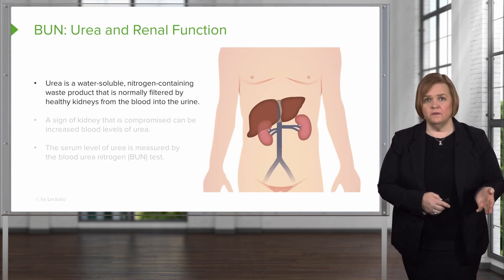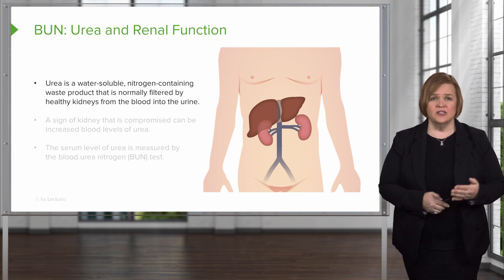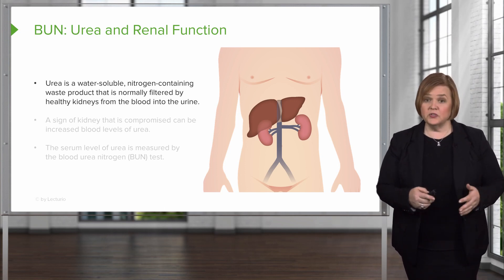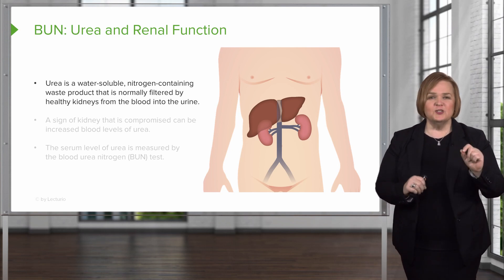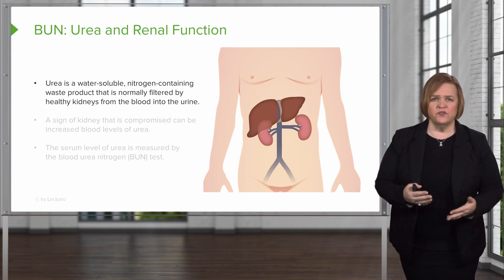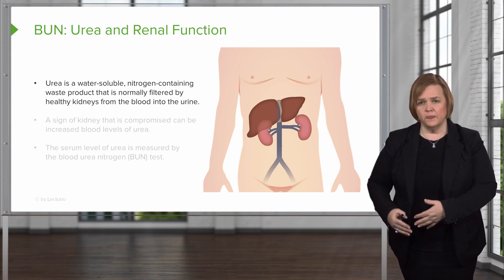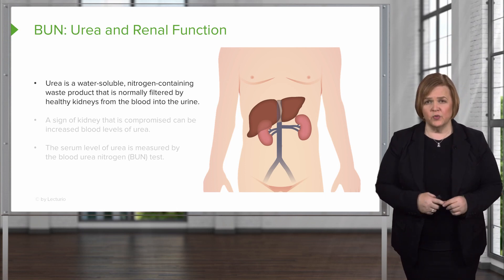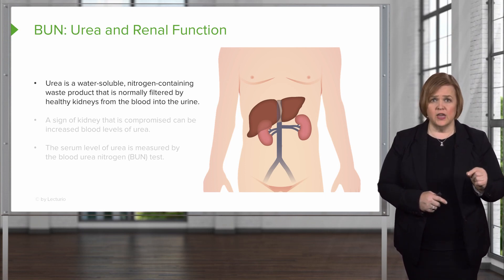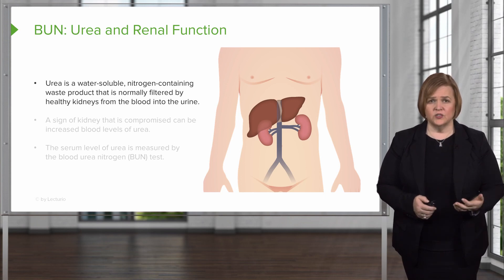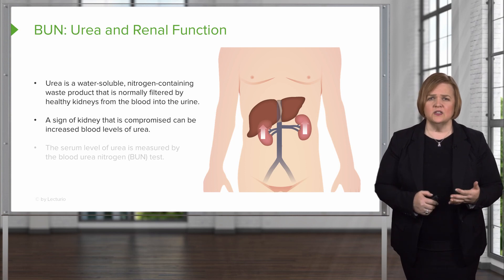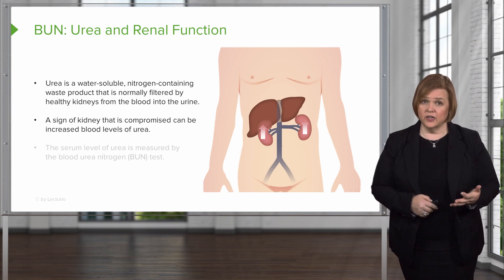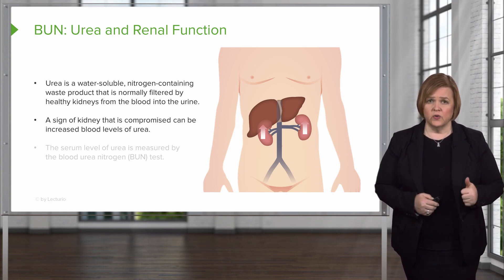Let's talk about the BUN and urea and renal function — this lets us know how your kidneys are working. Urea is a water-soluble, nitrogen-containing waste product. Normally your kidneys can filter it out from the blood and into the urine. That's the most important point: urea is a water-soluble waste product. An increased BUN level is a sign that the kidneys are compromised, or it can indicate the patient is dehydrated.